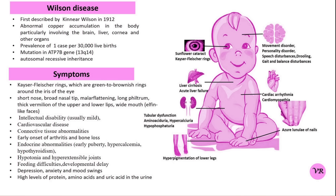It is inherited in an autosomal recessive manner. The diagnosis of Wilson disease is a combination of clinical suspicion — that is, neurological and hepatic symptoms — low serum ceruloplasmin, elevated urinary copper, and genetic testing for ATP7B mutations.